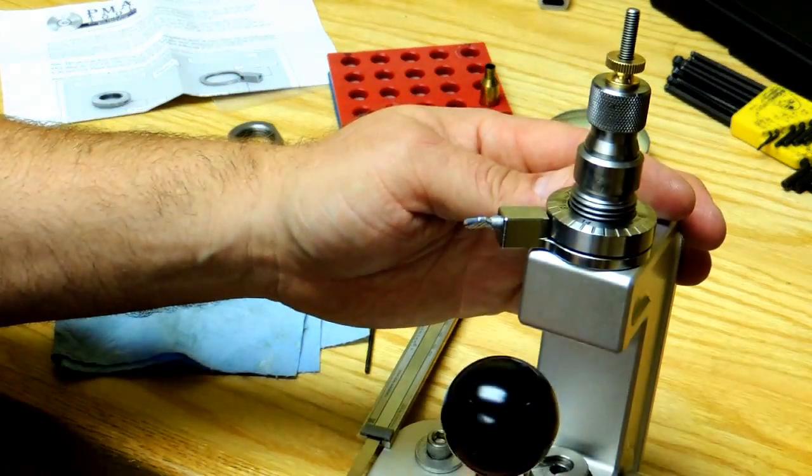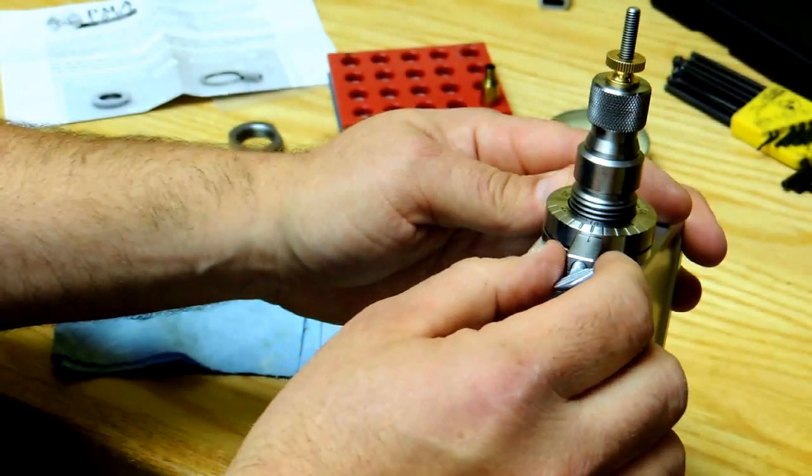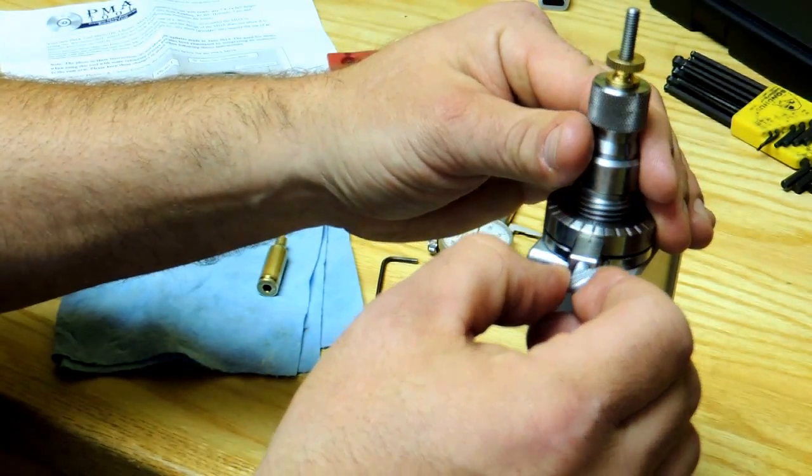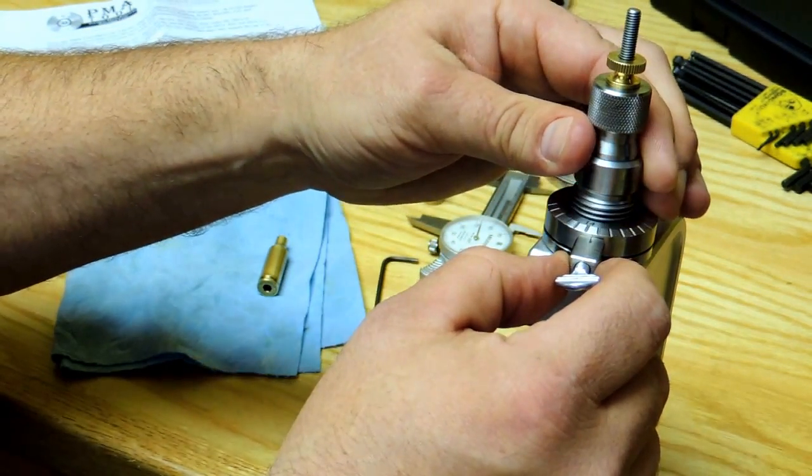To adjust the die, simply use the cam arm on the die adjuster to break the die free from the press. Loosen the adjustment lock screw and make our adjustment.